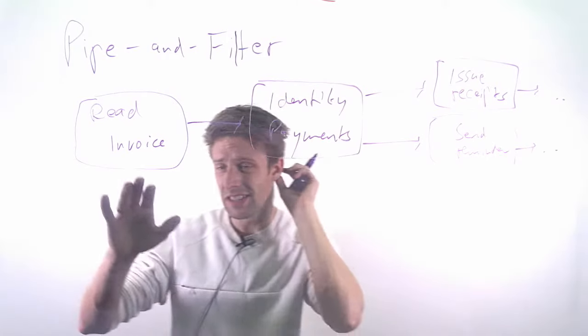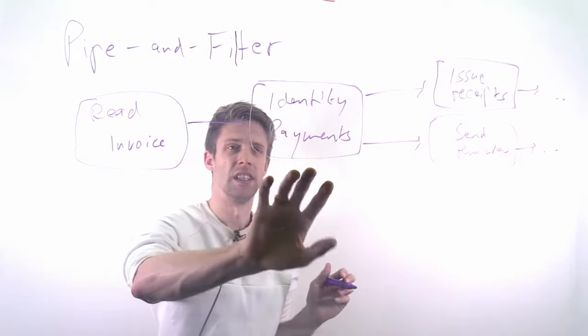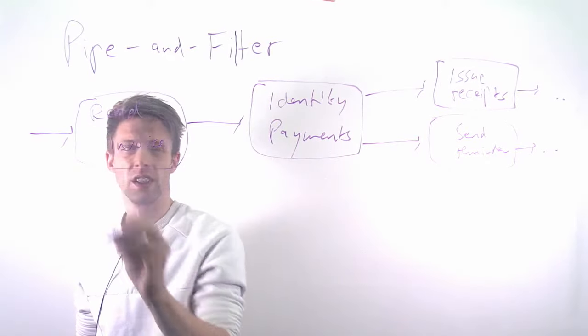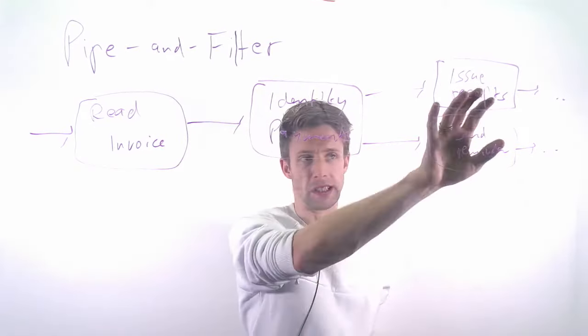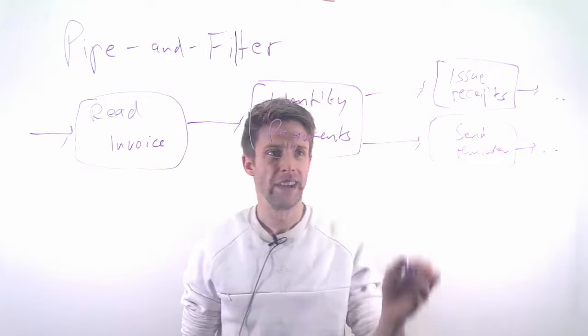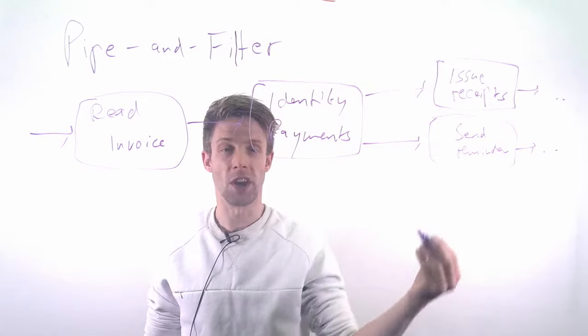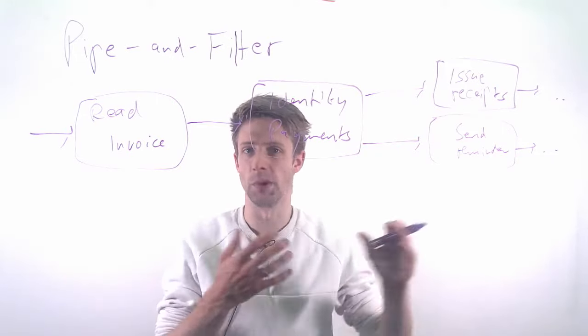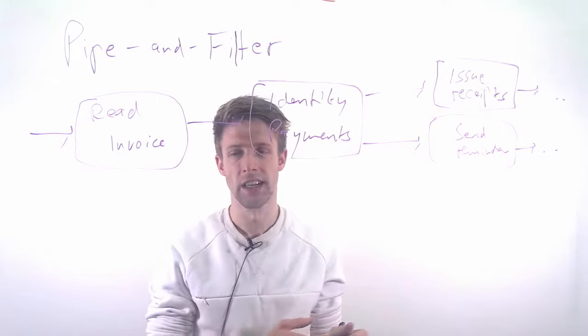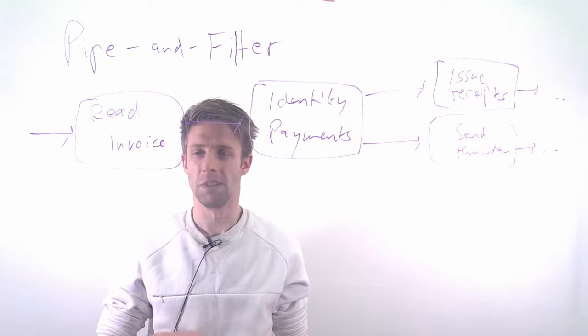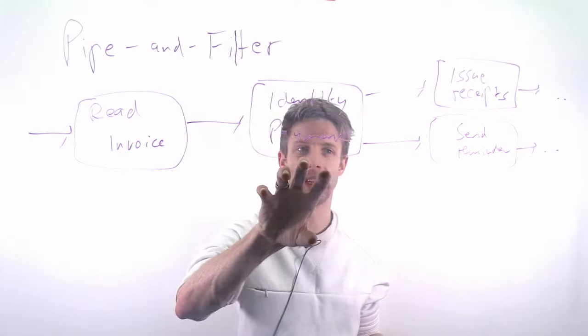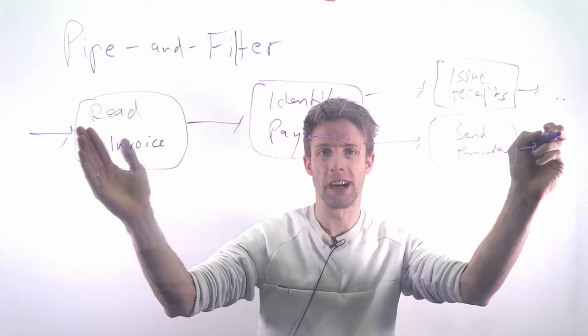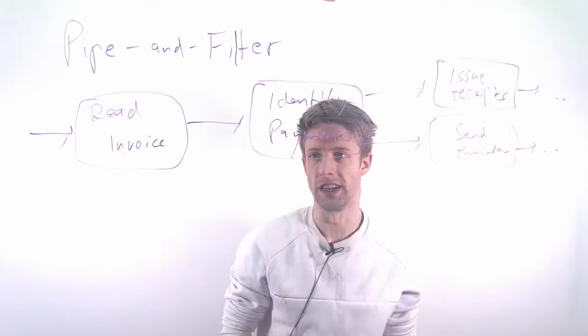Essentially you have steps that somehow transform our data that goes in and then have a certain output, for example a receipt or a reminder. There can be concurrent things, so the receipts are issued at the same time as the reminders for other payments are sent. Essentially here we have all these transformation steps and the data flows through this pipe and it's being filtered along the way.